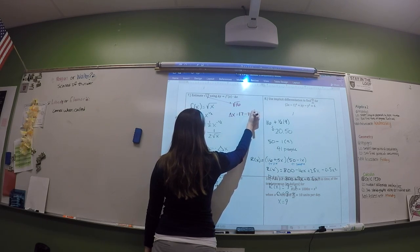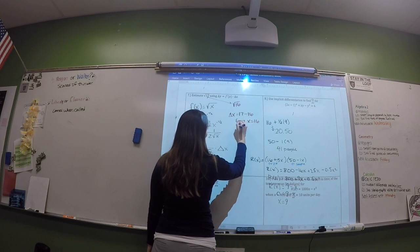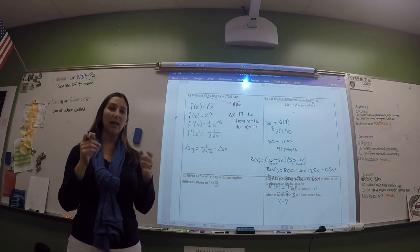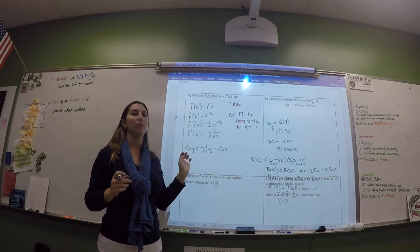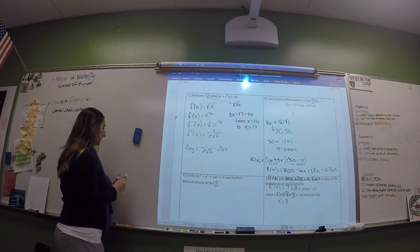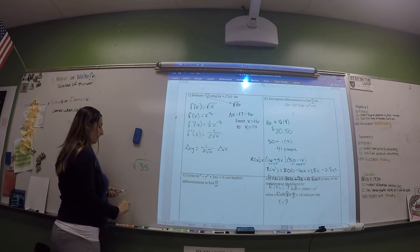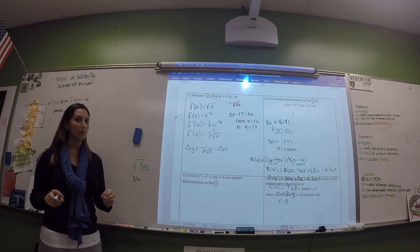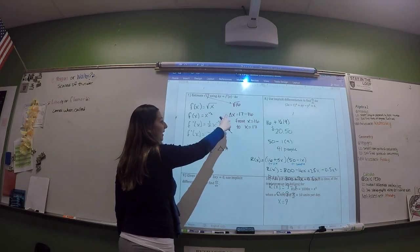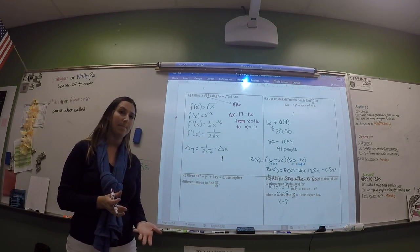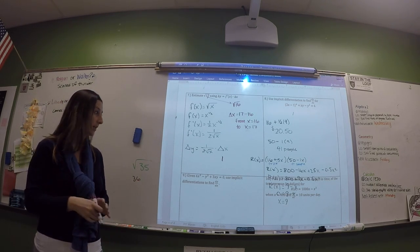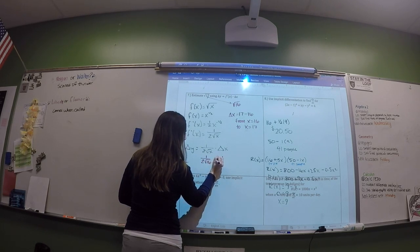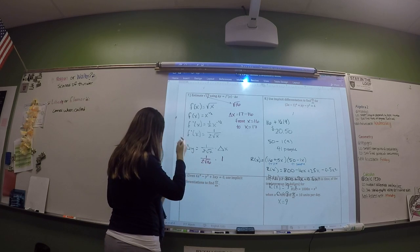Delta X is the change from X = 16 to X = 17, which is 1. X is the value we picked, which is 16. So delta Y equals 1 over (2 times the square root of 16) times 1. That's 1 over (4 times 2), which is 1/8.